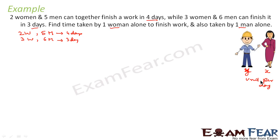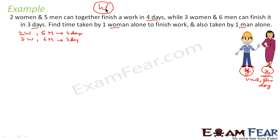This lady is doing x units of work per day and this man is doing y units per day. Since they are taking four and three days, I can assume that the total work is W — some big value. I can take any value.